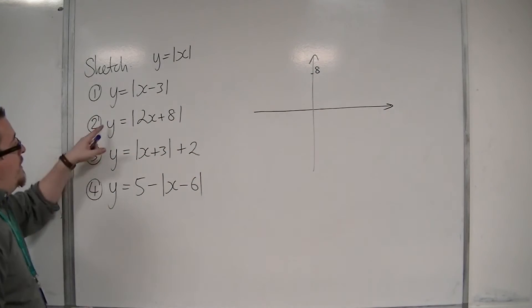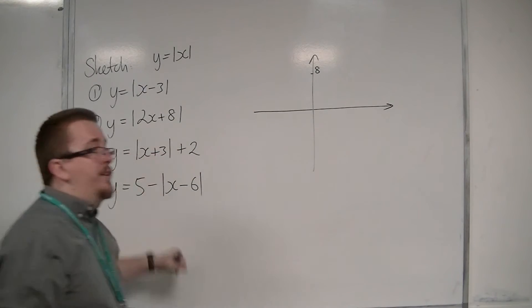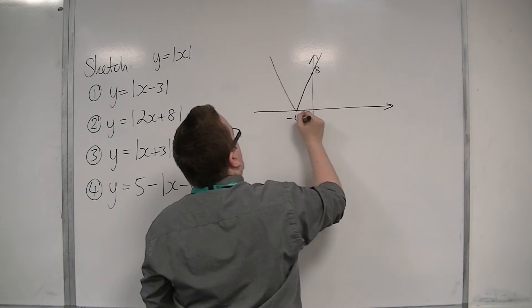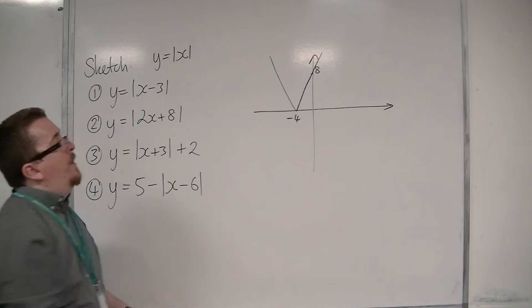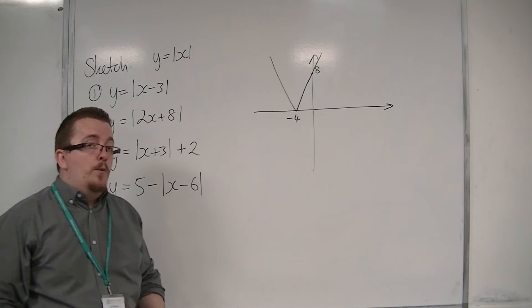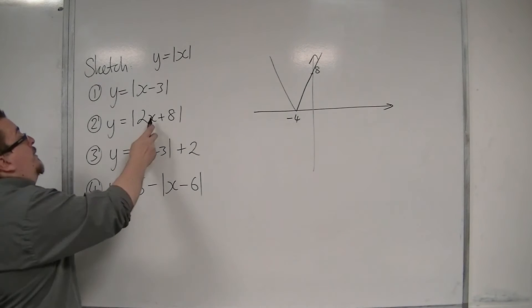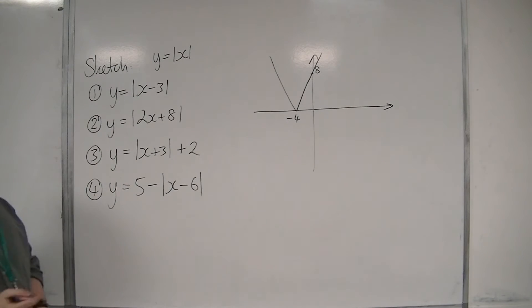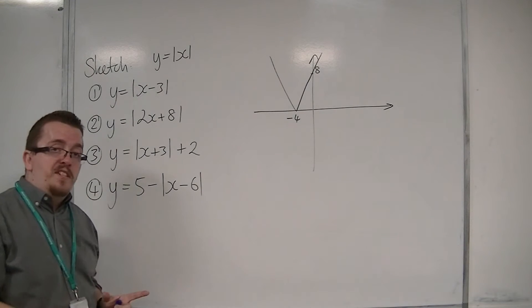And when y is zero, x would have to be minus four. And so it'll look like this, touching minus four on the x-axis and going through eight on the y-axis. It would have a steeper gradient than the first function because of that two in front of the x, rather than just one. So the lines will be steeper.